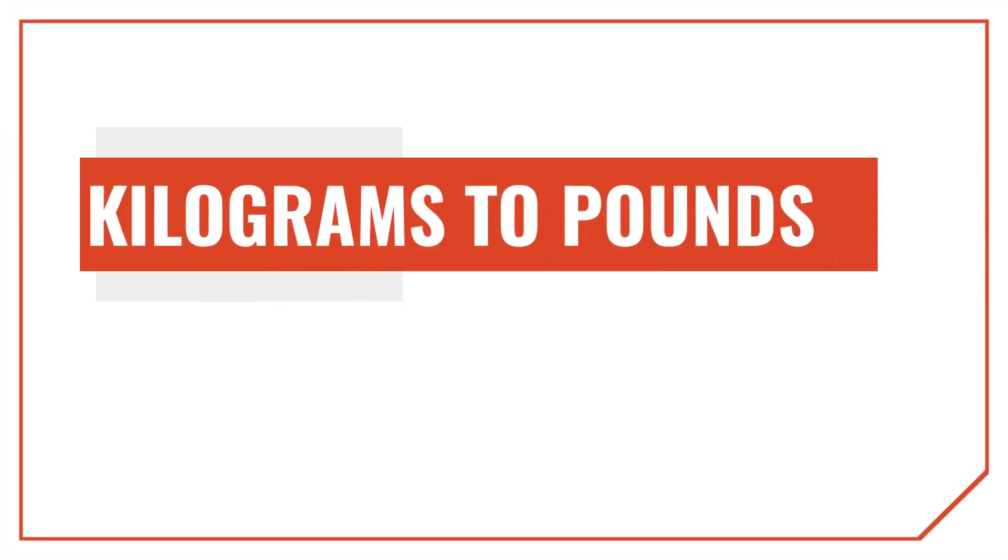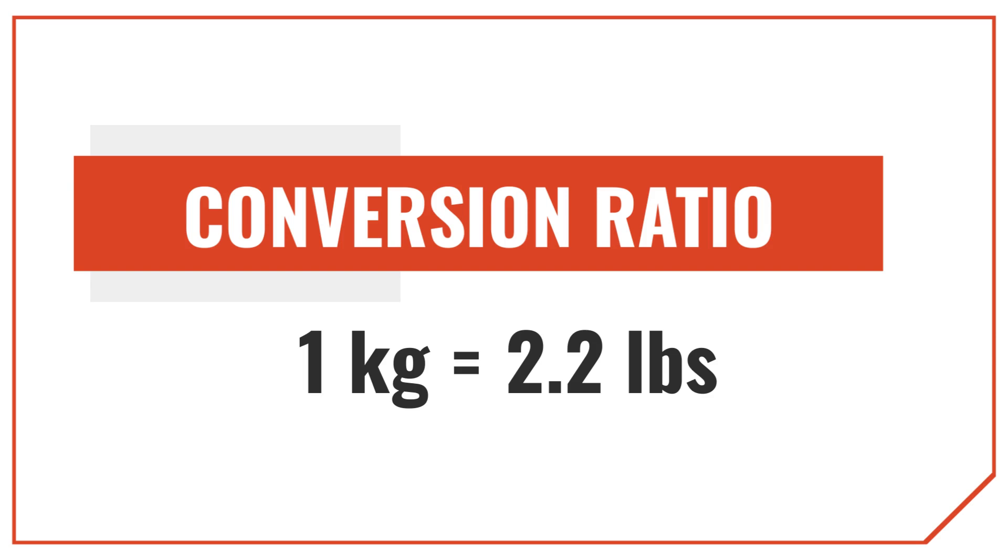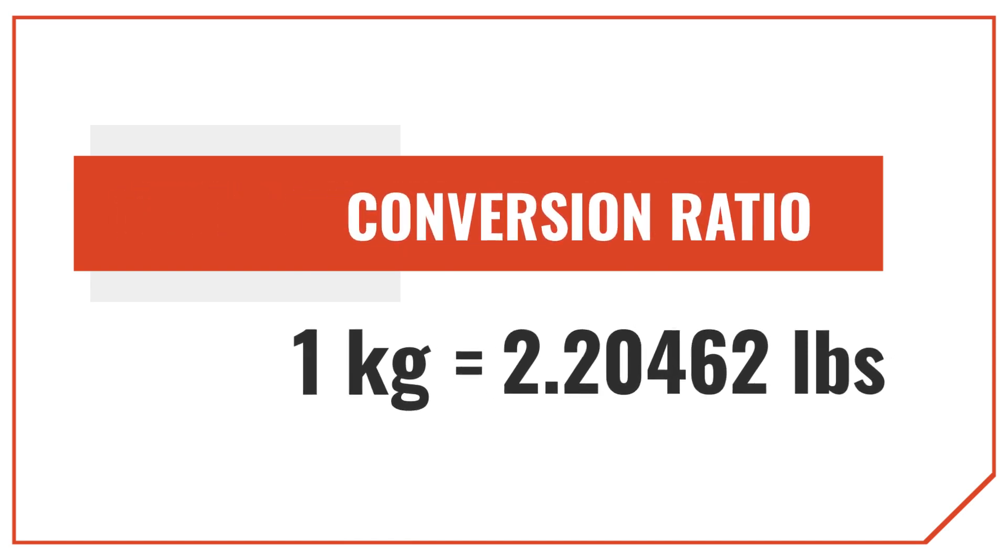Before I show you how to convert kilograms to pounds, we need to cover some basics. The most important thing to keep in mind is that one kilogram is equal to 2.2 pounds. We call this the conversion ratio. Technically, it's equal to 2.20462 pounds, so if you need to be more precise, then you should use this as the conversion ratio.